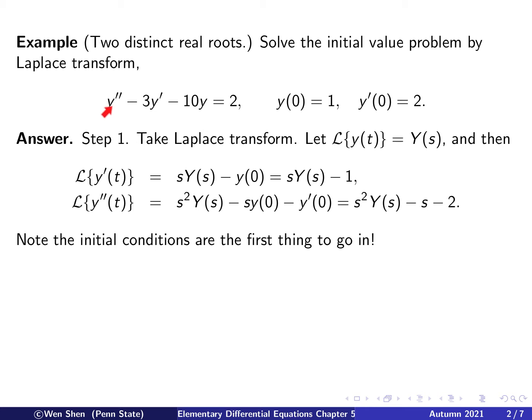We also need the transform of the second derivative, for which we have already derived a formula. This will be s squared multiplied on Y(s) and then the initial conditions in this form: s times y(0) minus y'(0). If we plug in y(0) = 1 and y'(0) = 2, we get the result. Notice that the initial conditions are the first thing to go in here, embedded immediately.